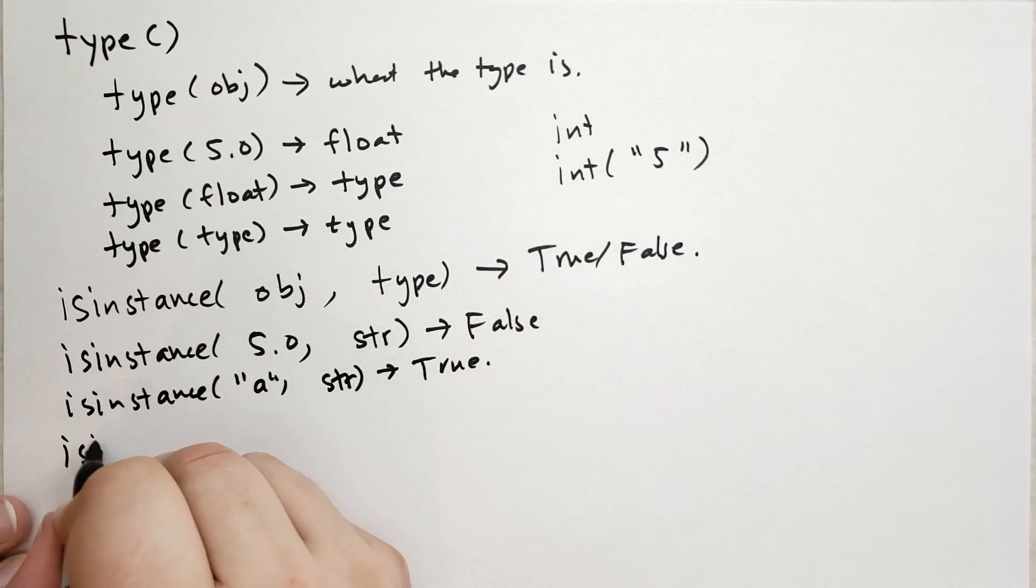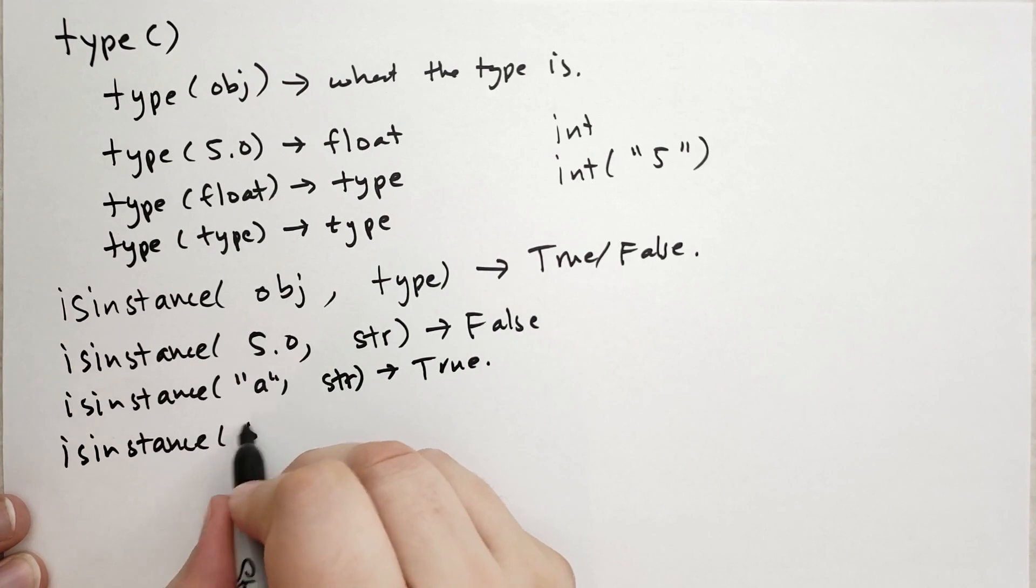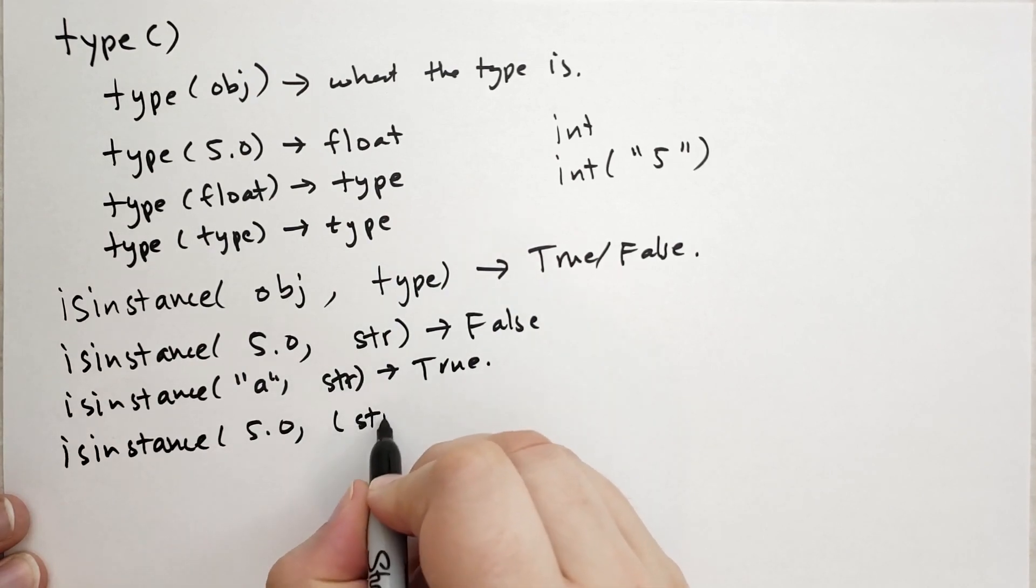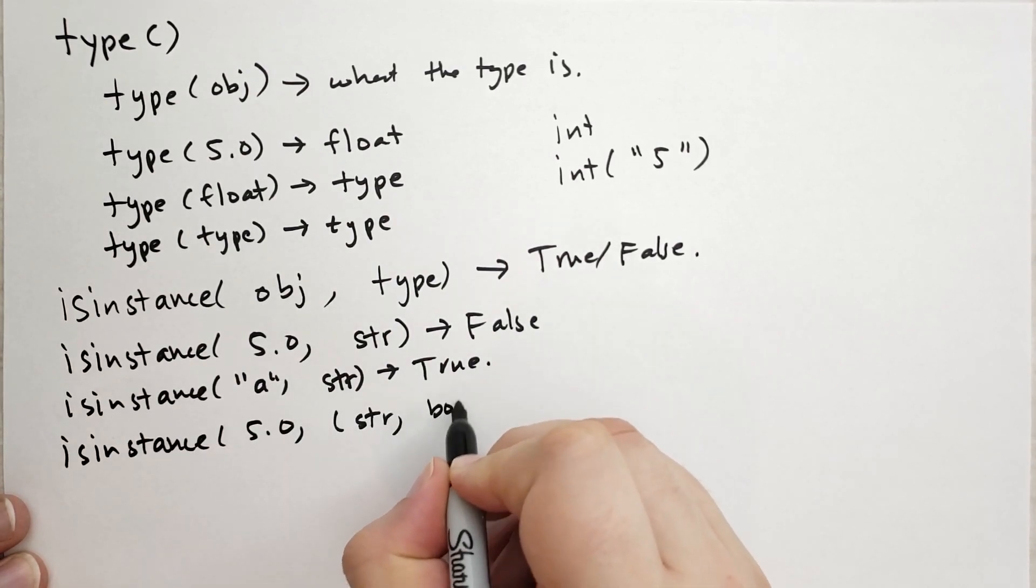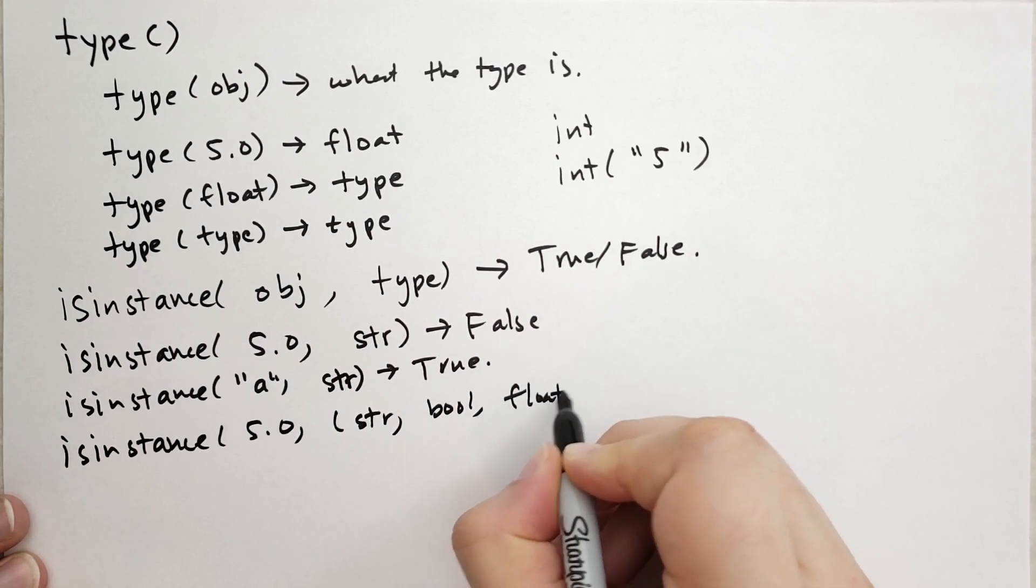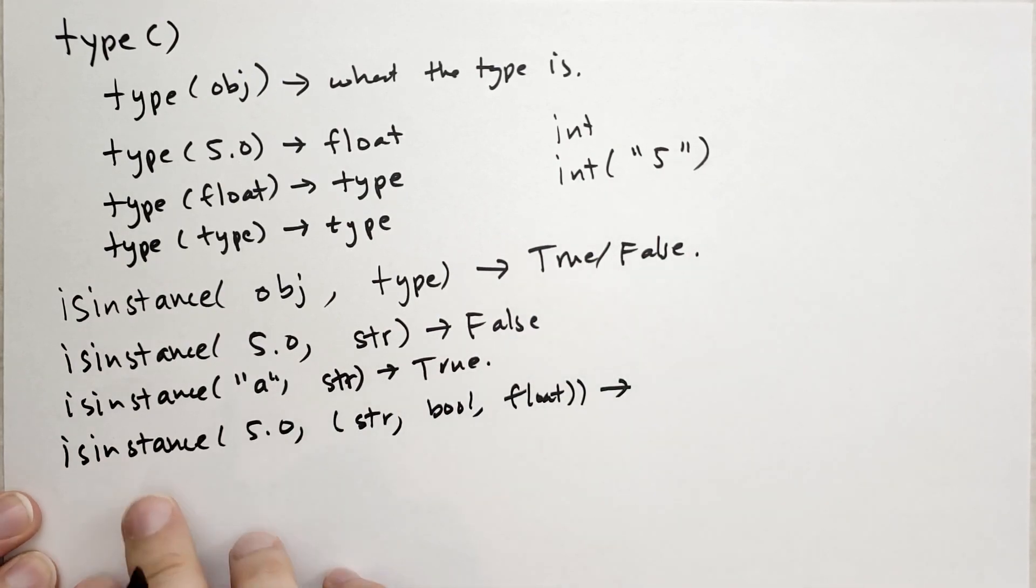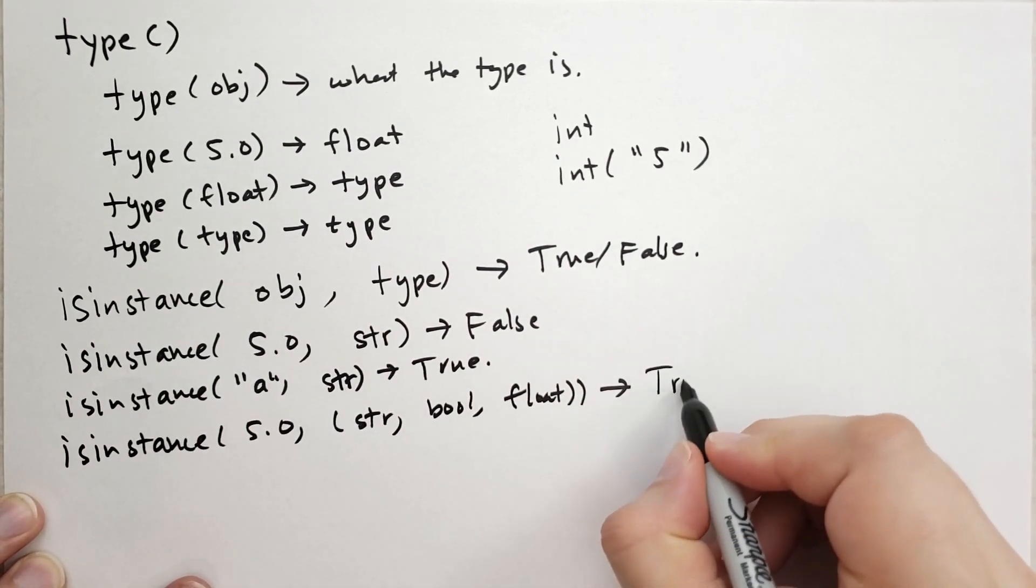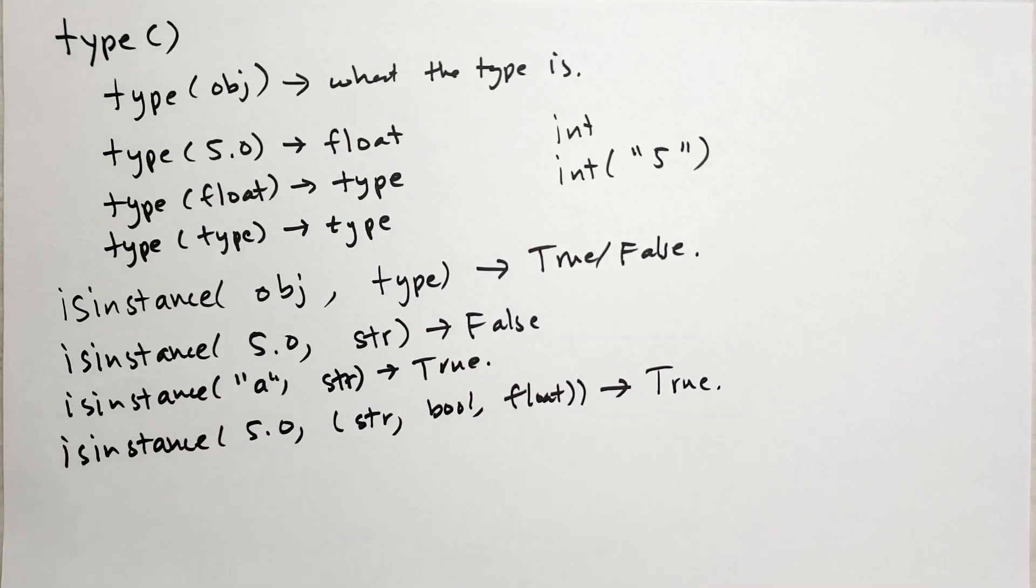You can also call isinstance with a tuple of types as a second parameter. So if I call it like this, or a float. So this is saying is 5.0 a string or a bool or a float? And the answer is yes, it's a float. So this is true. So that's the other way to call isinstance.